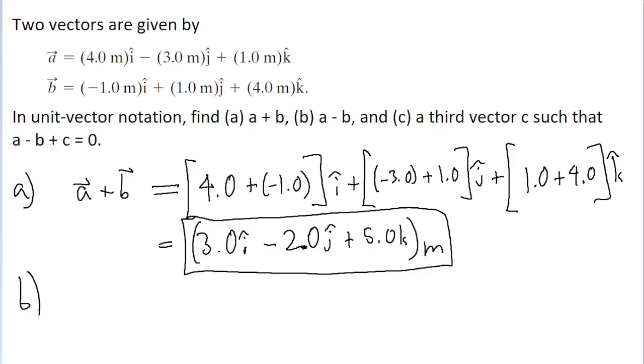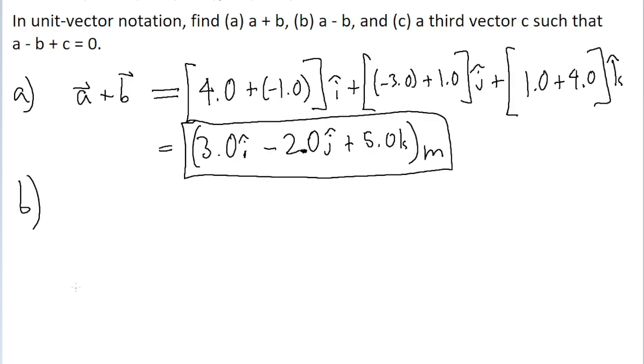Part b of the problem is asking us to subtract vector b from vector a. We use the exact same process essentially, only now we're subtracting the b components from a instead of adding them together. So the i component, instead of being four plus negative one, instead it's four minus negative one.